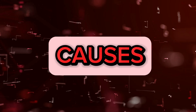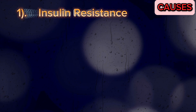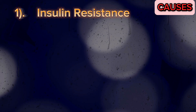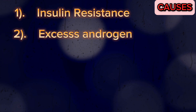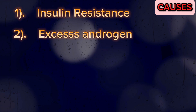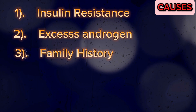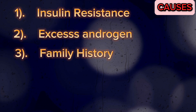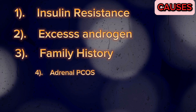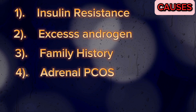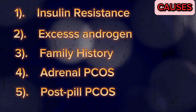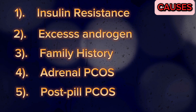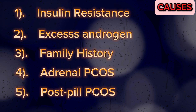What are the important causes of PCOS? The first is insulin resistance, which occurs in more than 70% of all cases, and causes weight gain. The second is excess androgens produced by the ovaries. The third is family history of PCOS. These three causes are interlinked. The fourth is adrenal PCOS, which occurs during massively stressful periods. The fifth is post-pill PCOS, which occurs after stopping oral contraceptive pills.